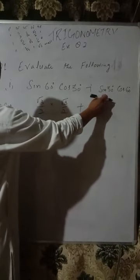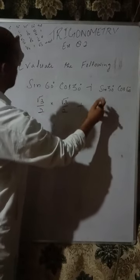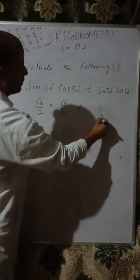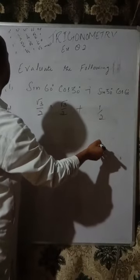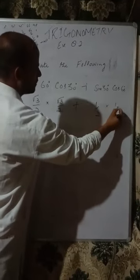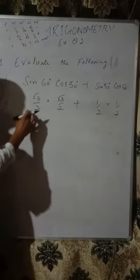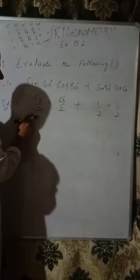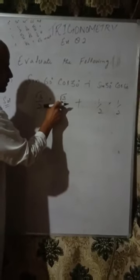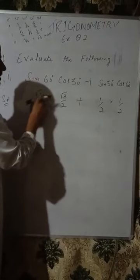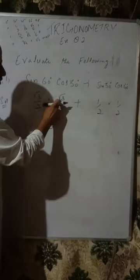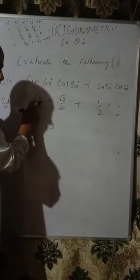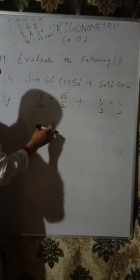Sin 30 degree is equal to 1/2, and cos 60 degree is also 1/2. When we multiply, we multiply the numerator and the denominator: √3 into √3 equals √9, and √9 is a perfect square equal to 3. Then 2 times 2 equals 4.